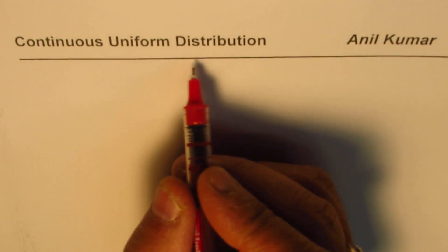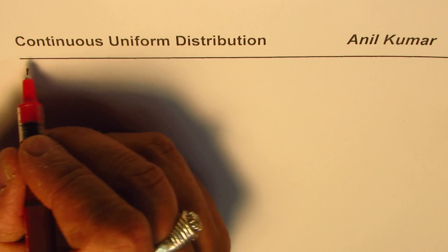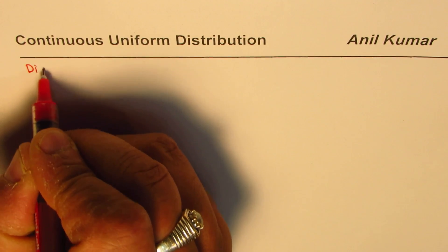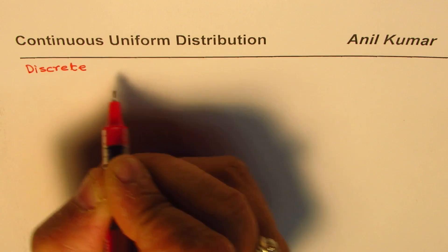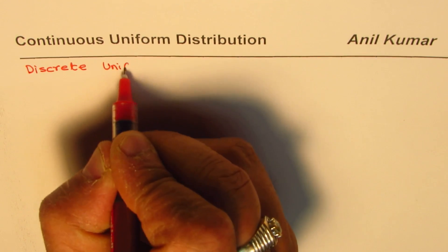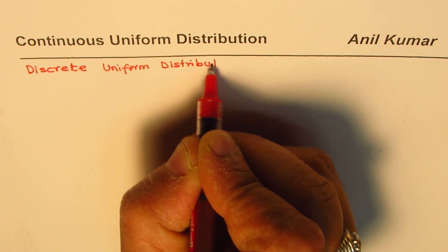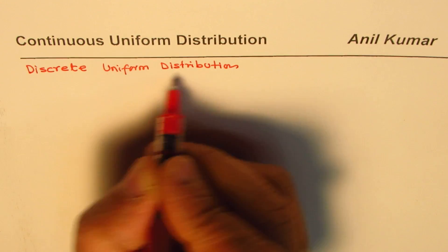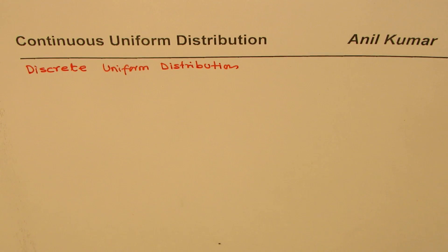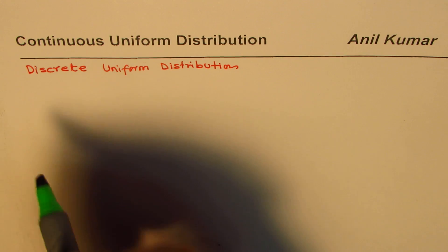I'm Anil Kumar and in this video we'll understand what is continuous uniform distribution. To begin with, let me talk about the discrete part of it. We'll first look at discrete uniform distribution — we have taken many examples of this kind. For example, tossing a coin: it could be head or tail, and for both the probability is 50-50.